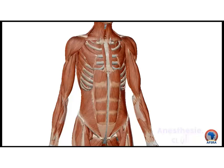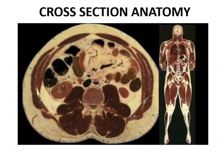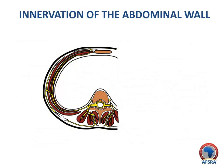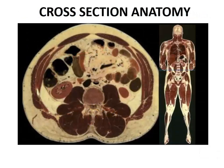This cross-section anatomy shows the different layers of the abdominal wall. From outside to inside, the different layers are: skin, subcutaneous tissue and fat, rectus abdominis muscle, external oblique muscle, internal oblique muscle, transversus abdominis muscle, transversalis fascia, preperitoneal fat, peritoneum, and abdominal content.